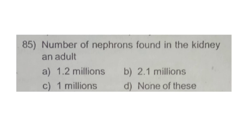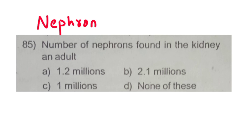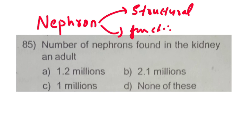First question: what is the number of nephrons found in the kidney of an adult? The correct answer is 1.2 million. 1.2 million is the number of nephrons.